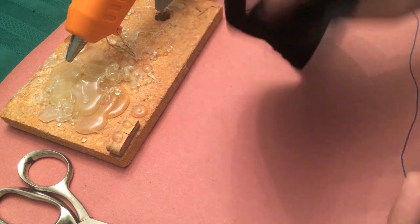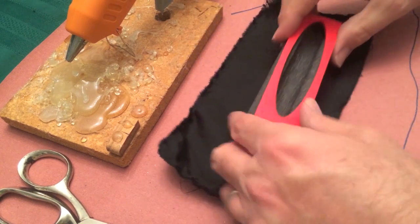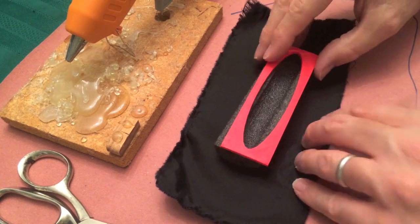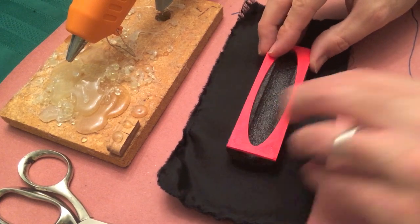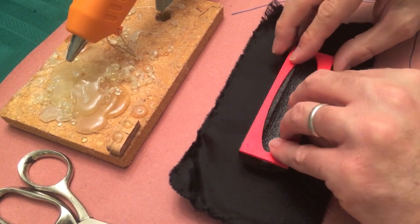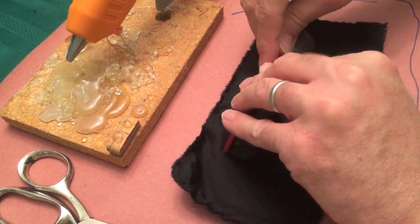This is a piece of black velvet. I just got it at the craft store. It works perfectly, and I cut it to a size so that it would just kind of wrap around the end. This is going to become the cleaning surface that you'll use on your record.